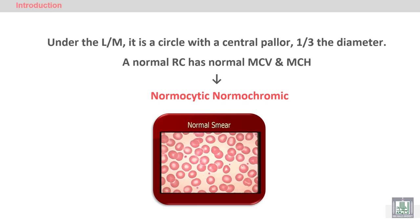Under the light microscope, the central pallor is visible in the center of the red blood cell. It represents about one-third of the diameter, while hemoglobin in the periphery represents two-thirds — confirming the cell is normochromic. Normocytic size is confirmed by comparison with the small lymphocyte. Using the cell counter, the MCV, MCH, and MCHC values will all fall within the normal range, confirming normocytic normochromic red blood cells.